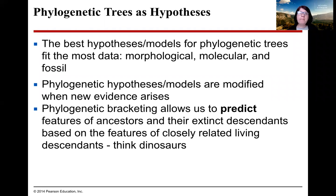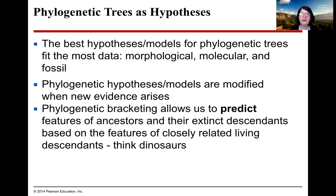The best phylogenetic tree hypothesis fits the most data — using morphological data, molecular data, and fossil data. As new evidence emerges, these trees are revised. Because they are models, they also allow us to predict features of ancestors and their extinct descendants based on the features of closely related living descendants — and think dinosaurs.